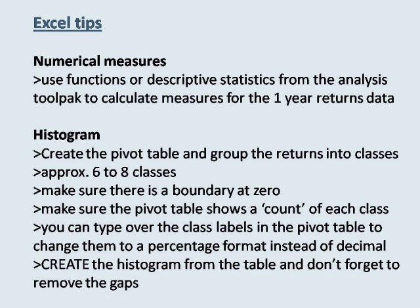Make sure your pivot table has a count for each class rather than something like a sum — you are aiming to count how many returns are in each class. Also keep in mind that Excel will convert the returns used in the class boundaries into decimal format rather than percentage format, so if you want them to show as a percentage then you will need to type over the class labels. Also, if you get a funny value for the class boundary that should be zero, this is just a quirk of Excel. The number shown is very close to zero, but feel free to replace it with zero by typing over the label.